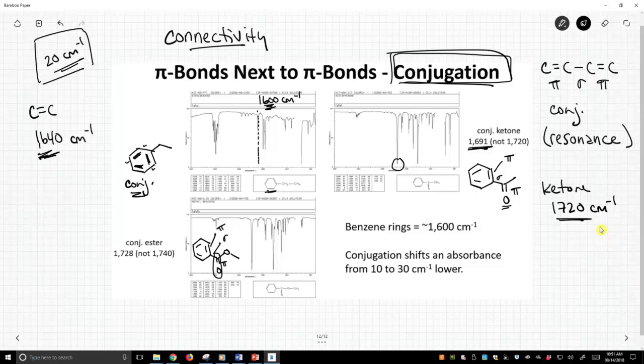This is conjugation, so this ester is not going to be at the expected 1740. The shift is not as dramatic in this case. It's about 1728, which is kind of low for a typical ester.